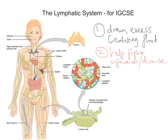When we refer to waste products, essentially what we mean is cell debris, bacteria, and also proteins. We have this network of lymph vessels — tiny channels that run through the body carrying what's called lymph fluid. On the diagram we're labelling these lymph vessels, and they carry this lymph fluid.